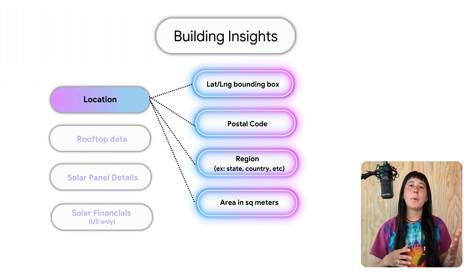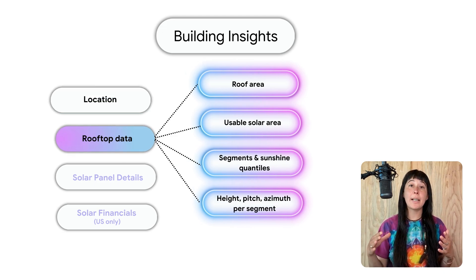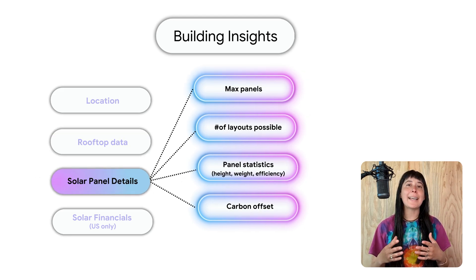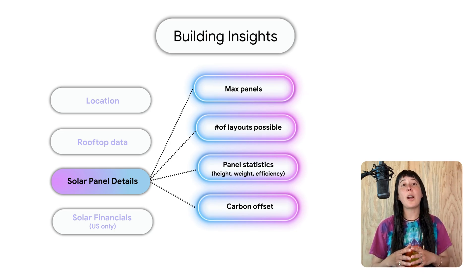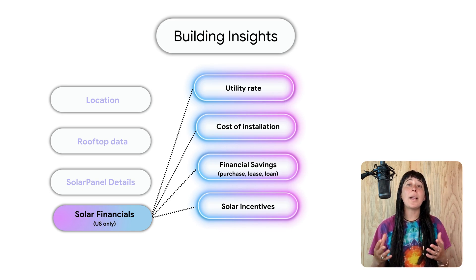Location contains information like the postal code, state, and country of the address, as well as the longitude and latitude bounding box of the nearest known building. Rooftop data offers information about the roof's area, possible area for solar, and more granular details about the roof. Solar panel details tells you things like how many different types of solar designs can emerge, how many solar panels can be installed, and what is the possible carbon offset by going solar based on current utility usage. Finally, if you work with homes in the US, you can leverage out-of-the-box financial models that include assumptions on utility rates, cost of installation, estimates on loans and purchases, return on investment data, as well as possible incentives. To assess financial estimates in other countries, you can create your own custom financial models, which I will touch upon in a bit.